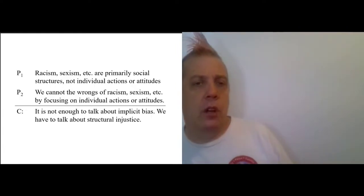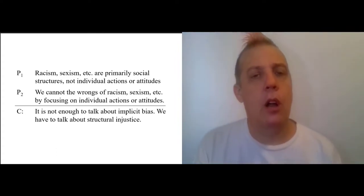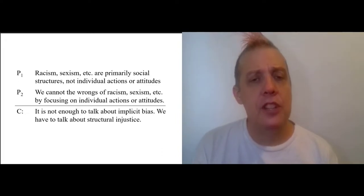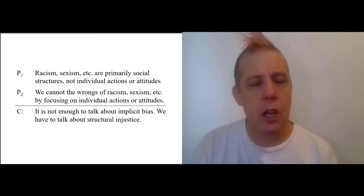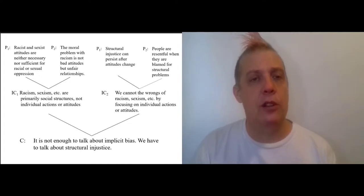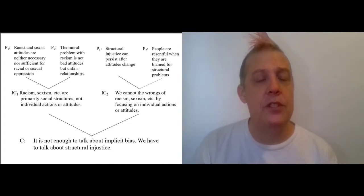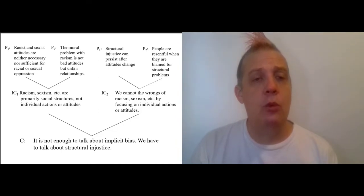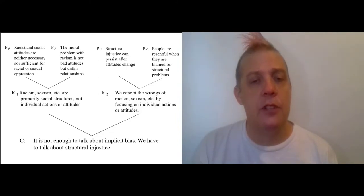So these two come together: racism and sexism are primarily social structures, and we cannot right the wrongs of them simply by focusing on individual actions or attitudes. Therefore it is not sufficient to talk about implicit bias — we must talk about structural injustice. You can think of the argument as flowing down from these basic premises through intermediate conclusions to the final conclusion: it is not enough to talk about implicit bias; we have to talk about structural injustice.